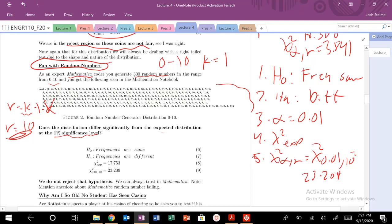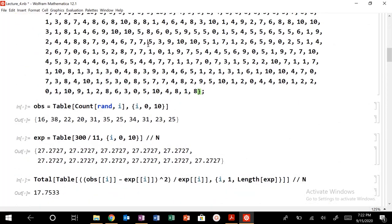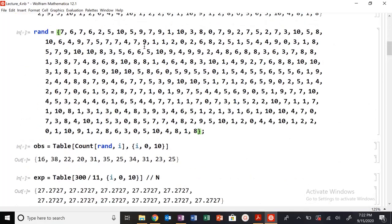So I have all these different possible values. If I generate 300 random numbers, I should have an equal number, probabilistically, if it's completely random, of generating 0, 1, 2, 3, 4, 5, 6, 7, 8, 9, 10. So if I want to figure out what my expected value is, this is my random number generator. These are my list of random numbers. I want to count how many times I get 0 to 10.